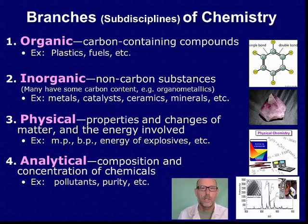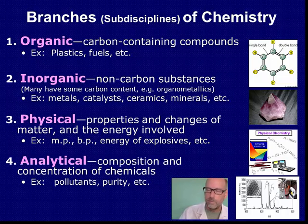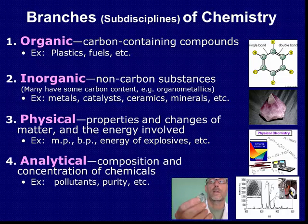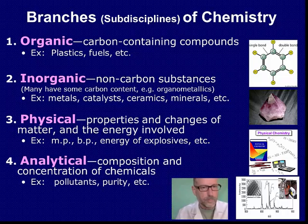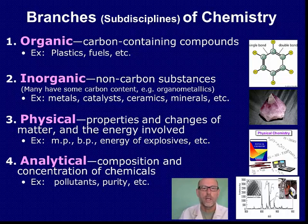The next category is inorganic chemistry, which means there's no carbon, or at least very little carbon. If you look at this beautiful azurite, it's a mineral or rock that has lots of copper in it. Or this crystal of silica, or silicon dioxide — those have very little carbon in them, so we call that inorganic chemistry. Metals, catalysts, ceramics, and minerals are all involved in inorganic chemistry.